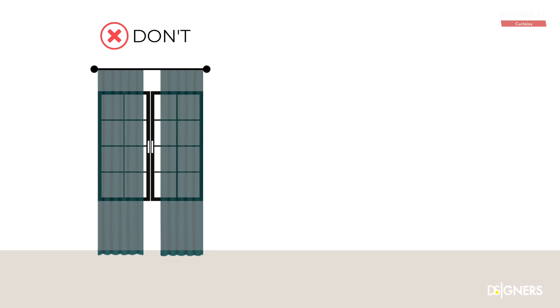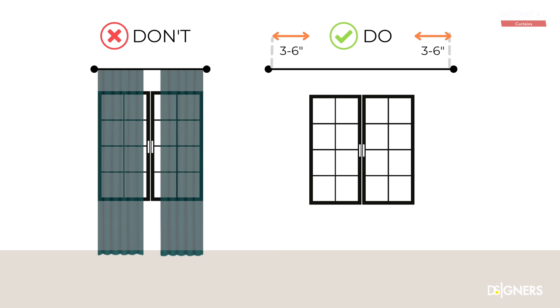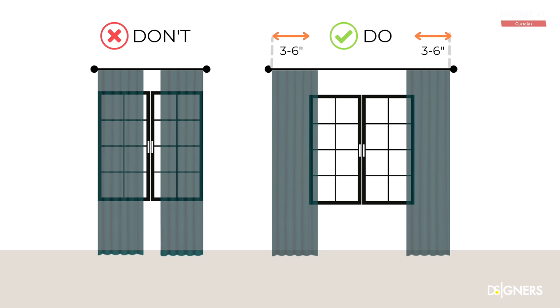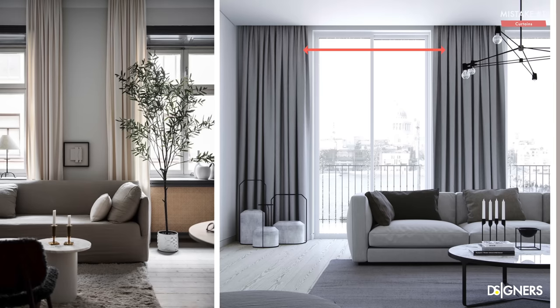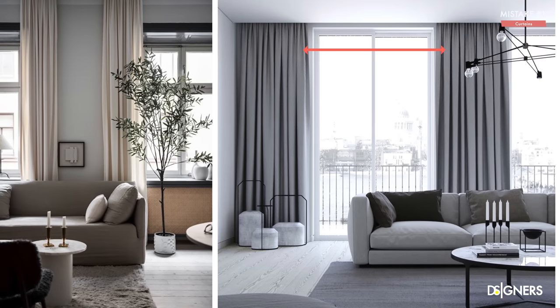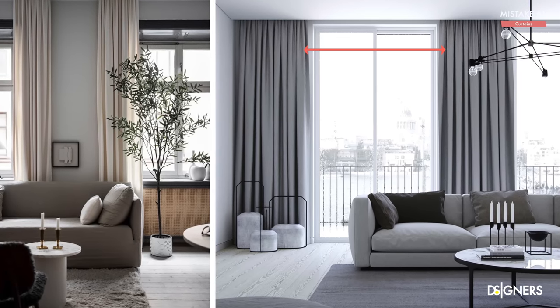This is one of the top mistakes in window treatment placement. Instead, have curtain rods that extend about three to six inches from both the lateral ends of your window. Ensure the rod is wide enough so that when the curtains are open, the inner edges just cover the window frame but not the glass. This will help the window look larger and prevent the panels from blocking the natural light.